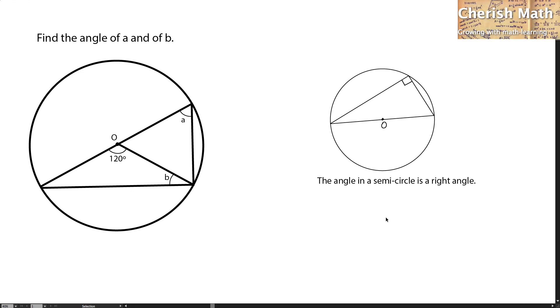Say hi from Cherish Math. Today we are dealing with the sixth question of the circle theorem. Find the angle of A and of B.